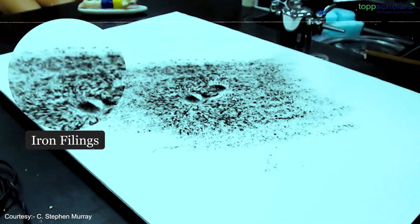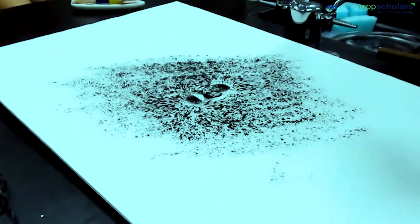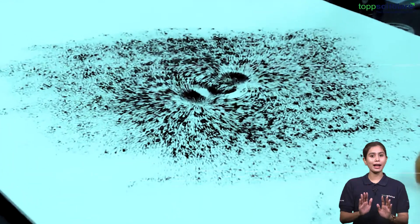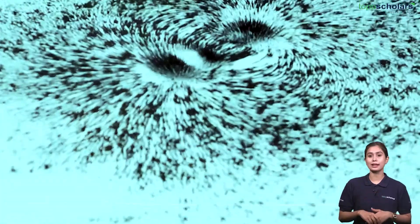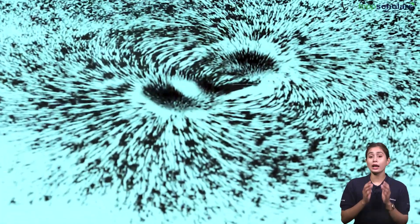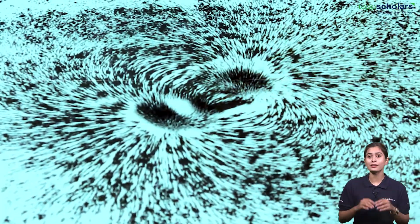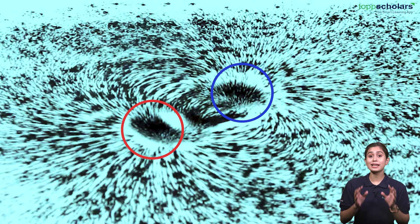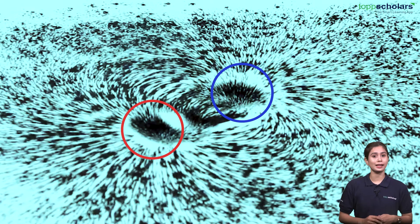Hold your sheet above the magnet and gently tap the paper. Sit back and watch what happens next. Do you see how the iron filings gather more densely at each end of the magnet? Magnetic force is strongest at the ends.